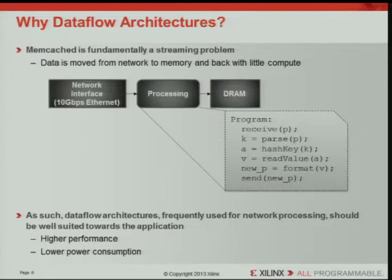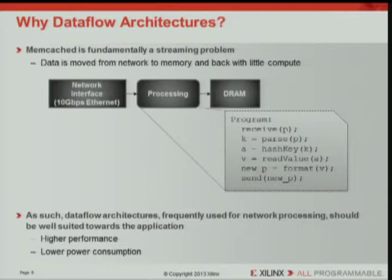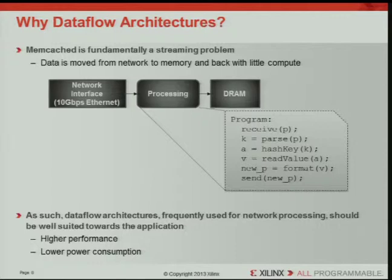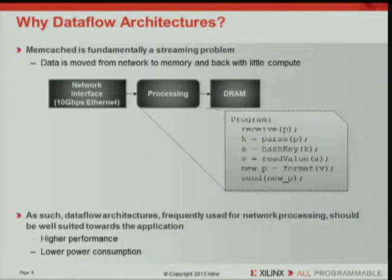So let's talk about the data flow architecture. Some might wonder why we picked a data flow architecture — there's a lot of research going into microservers for Memcached. We thought data flow architectures might be a good idea here because Memcached is a streaming application. You take data off the network, stream it into memory and back out, and on the way you have very little compute. All you do is parse packets, hash, do a lookup, read or write a value store, then format a packet and send it back out. Data flow architectures work really well for streaming applications, giving high throughput and very little power consumption.